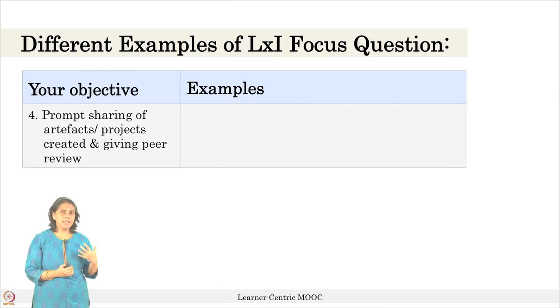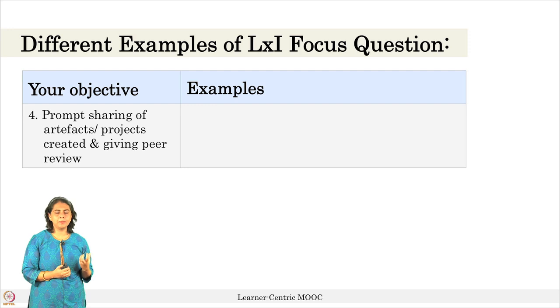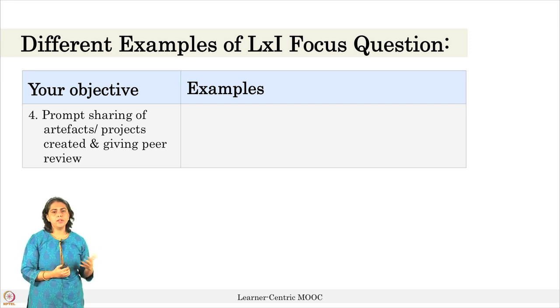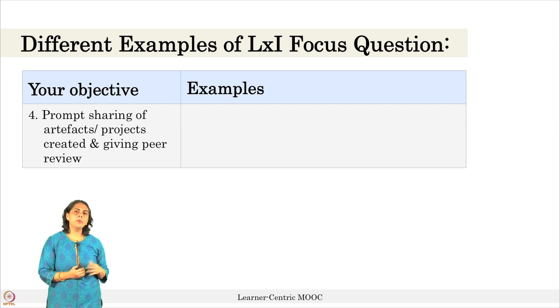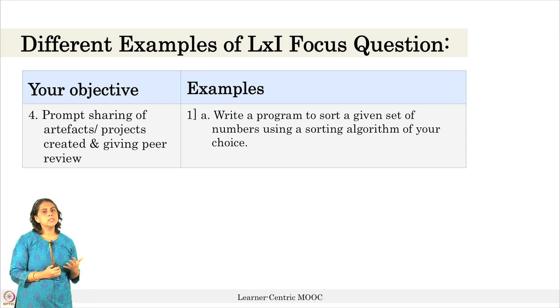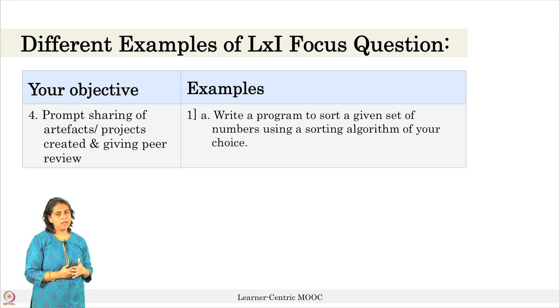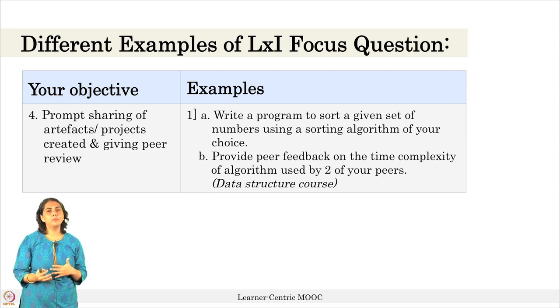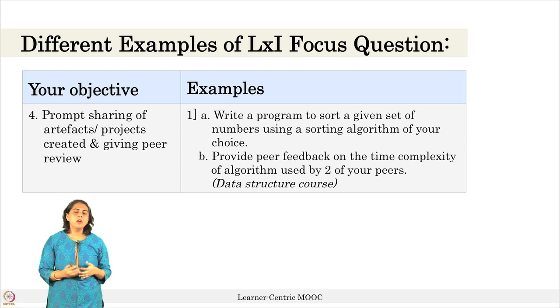The fourth category of LXI activity question is to make learners do create-level work, where they have to create something, share it in the forum, and do a peer review of others' postings. For example, in a data structures course, the task could be: write a program to sort a given set of numbers using a sorting algorithm of your choice, and then do a peer review on the time complexity of the algorithm posted by your peers.